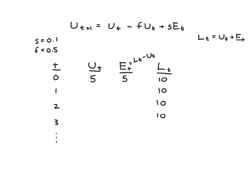So now we can start doing some calculating. Let's get Ut+1. We'll have U for period 1 is going to be U in period 0 minus f, which is 0.5, times U in period 0, which is 5. Let me erase U0 and just put a 5 - we know what it is, it's 5.